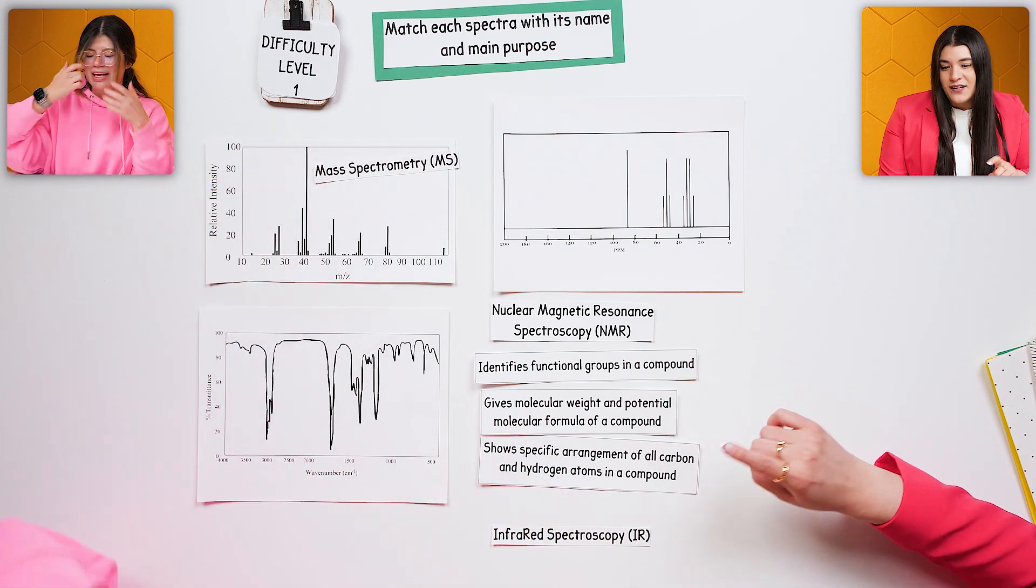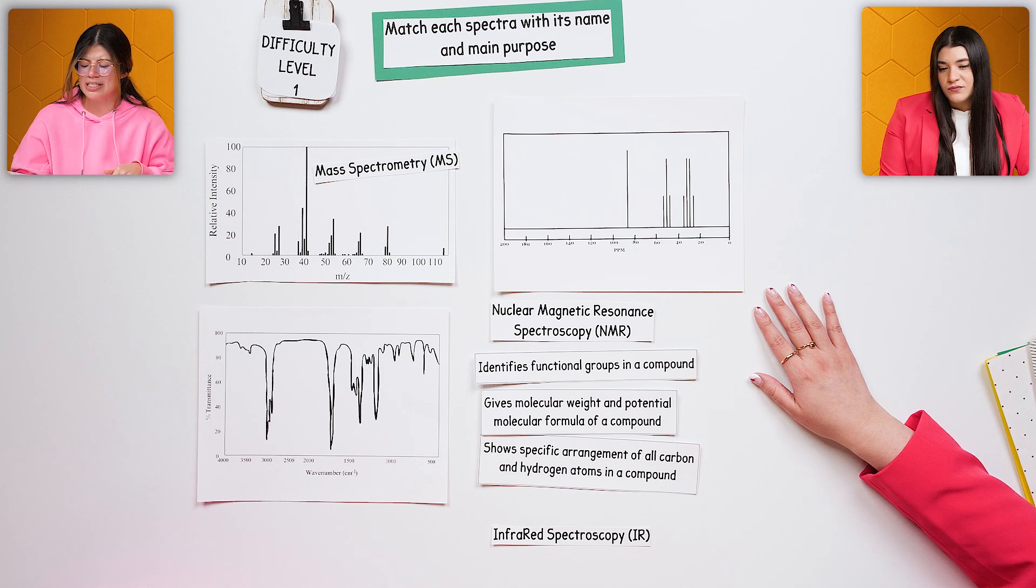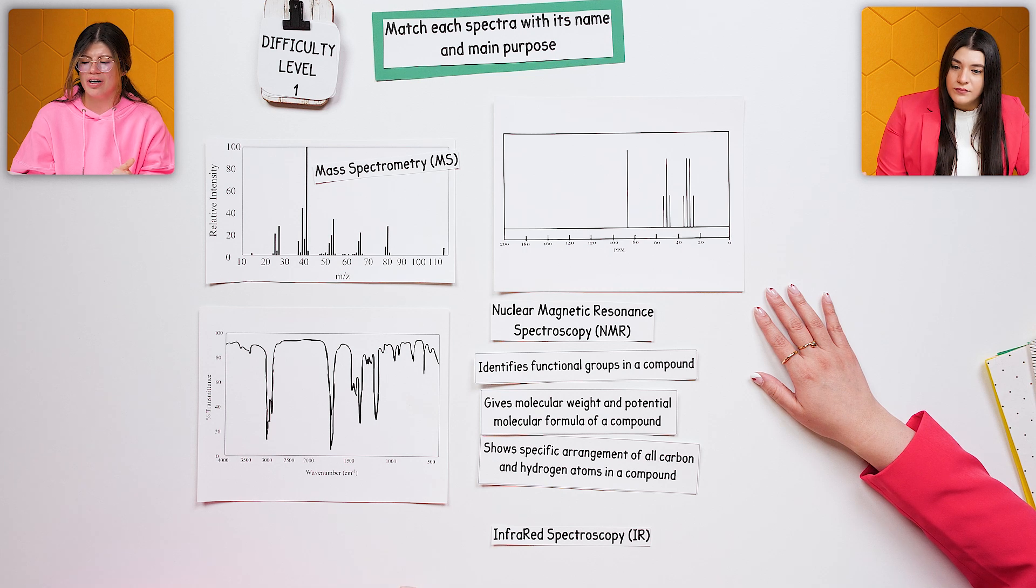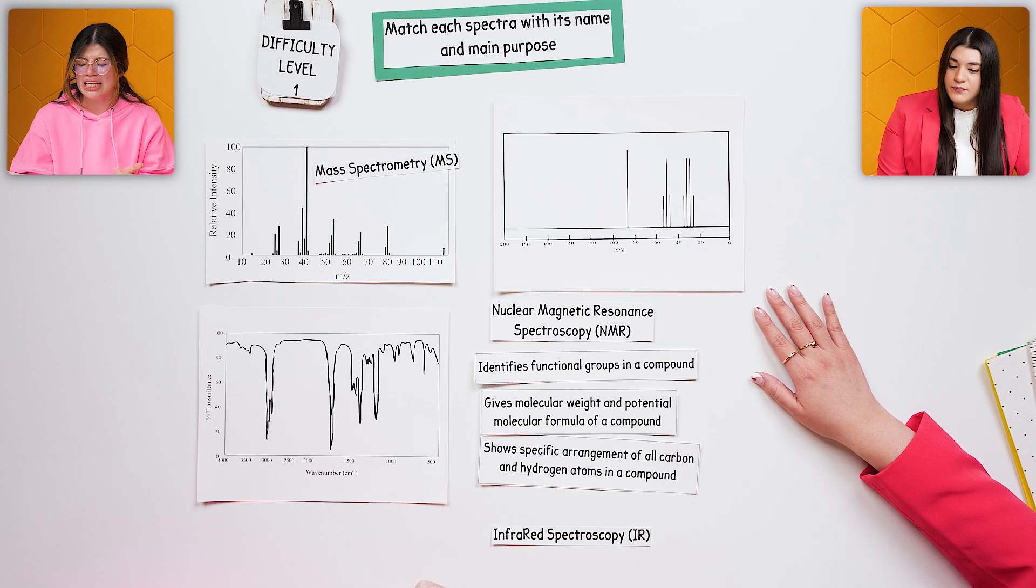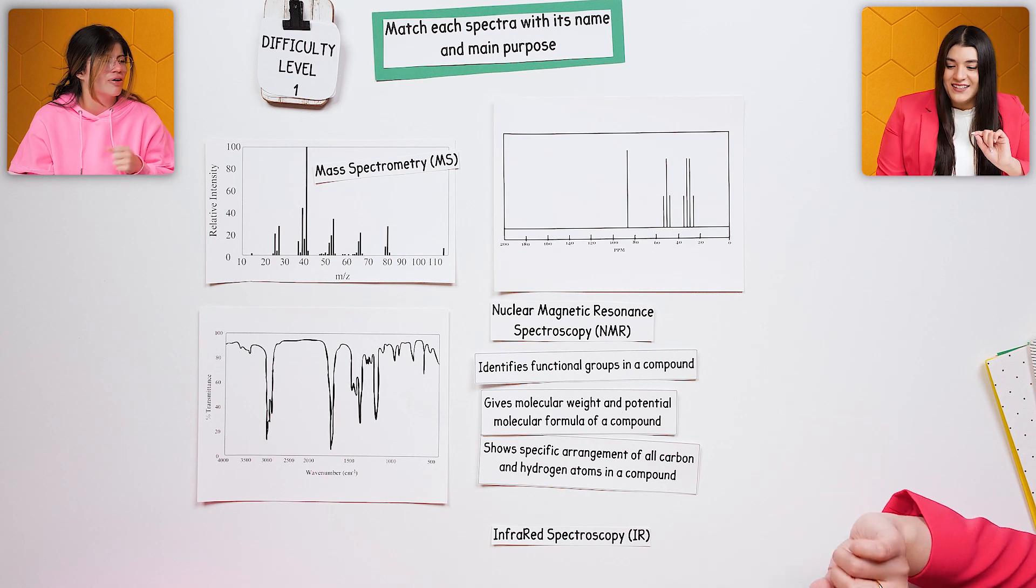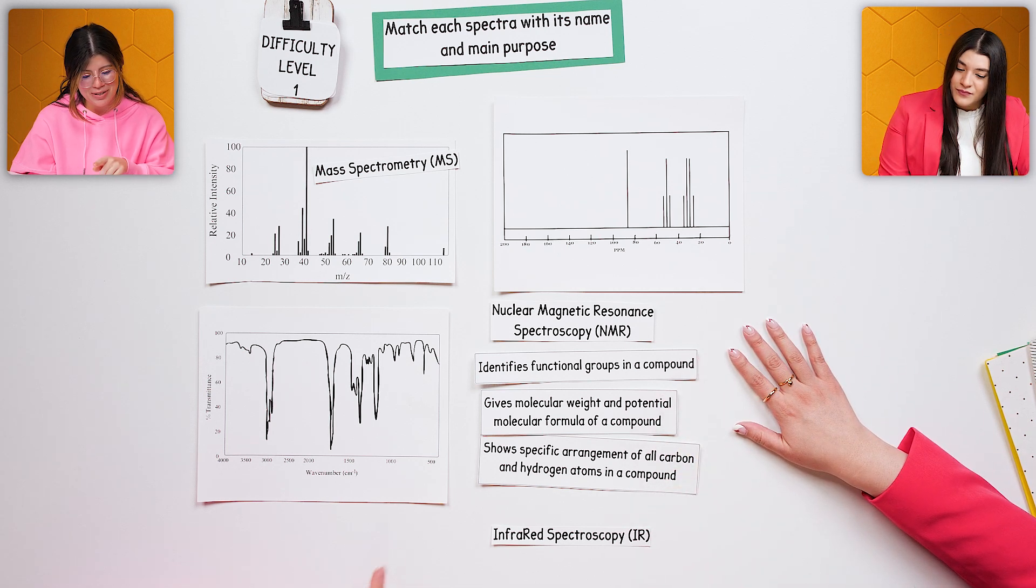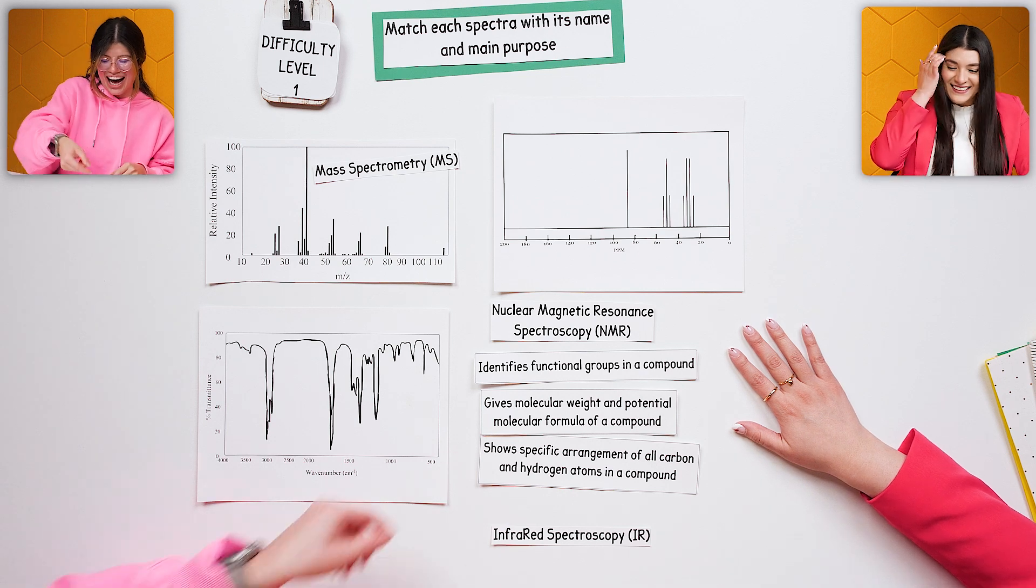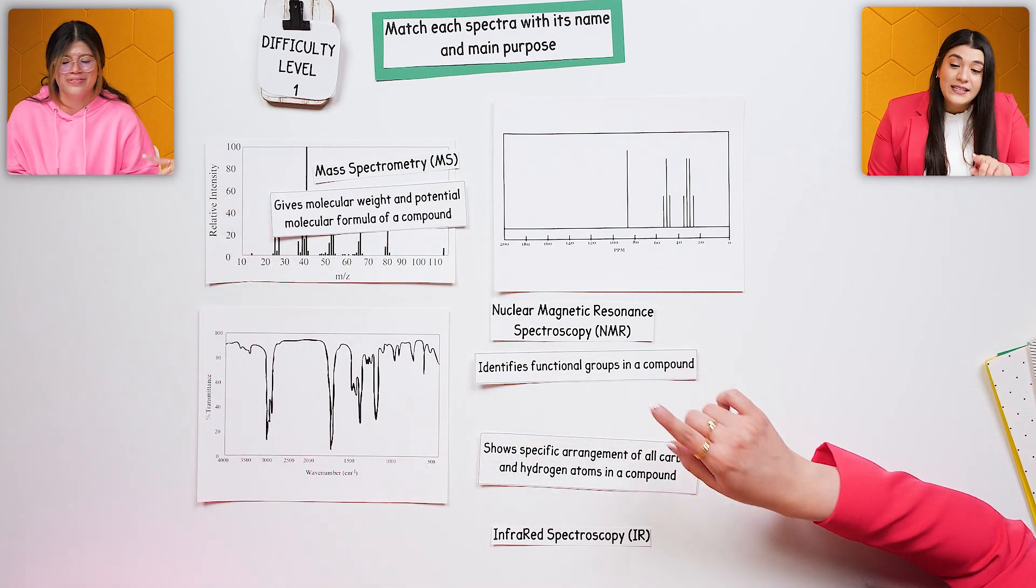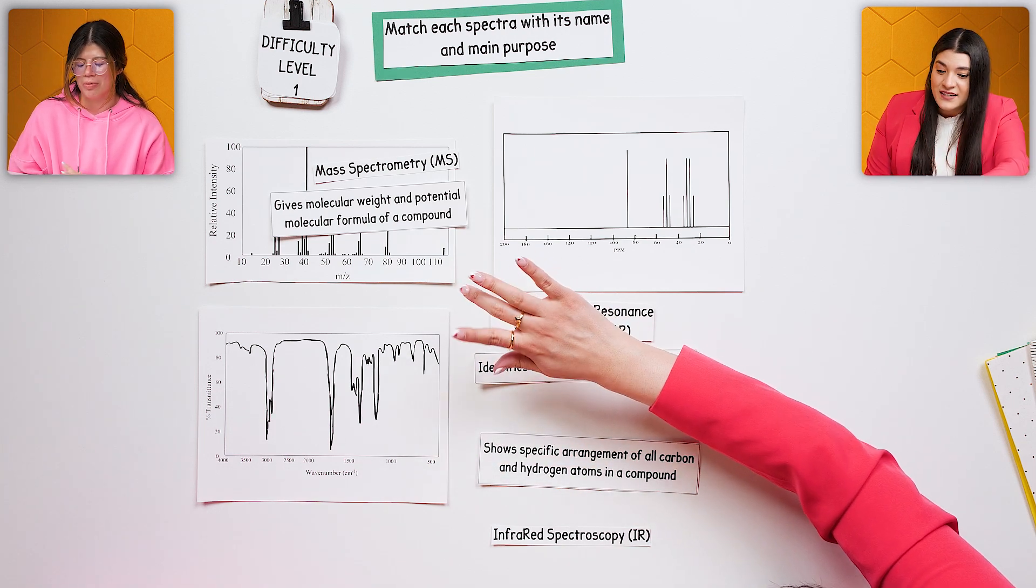What's the main purpose of that? That one's confusing to me. But I know when you're looking at it, it basically is telling you the mass of the structure. Because that one is going to be given. And then it tells you the fragments that break off. The mass of the fragments. Good. Is there anything here with the purpose that could possibly align to that? This one? Good. Yes. Molecular weight. That makes sense. Yeah, so mass spectrometry gives the molecular weight and potential molecular formula of the compound. That's its purpose.